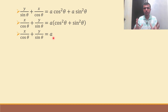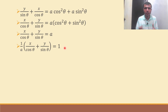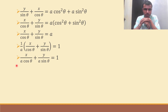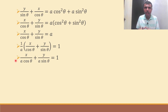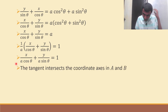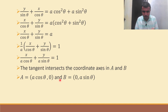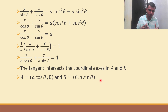I'm going to write this in intercept form. The RHS must be 1, so divide through by a: x/(a·cosθ) + y/(a·sinθ) = 1. This is the intercept form x/A + y/B = 1. The x-intercept is a·cosθ and the y-intercept is a·sinθ. So point A = (a·cosθ, 0) and point B = (0, a·sinθ).